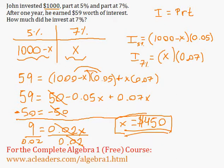What if the question was asking how much invested at 5%? Well, then we would just take away $450 from $1,000. And $1,000 minus $450 would be $550. But that's it. In this case, we're just asking how much he invested at 7%. And that would be the answer: $450.